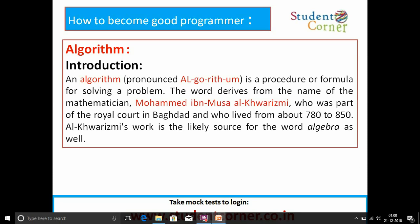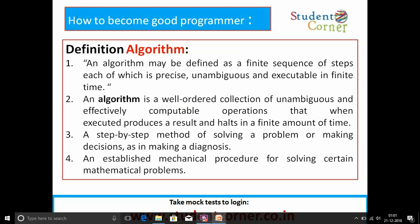Muhammad ibn Musa al-Khwarizmi, who was part of the royal court in Baghdad and who lived from about 780 to 850. He worked on what is likely the source for the word 'algebra' as well. An algorithm may be defined as a finite sequence of steps, each of which is precise, unambiguous, and executable in finite time.